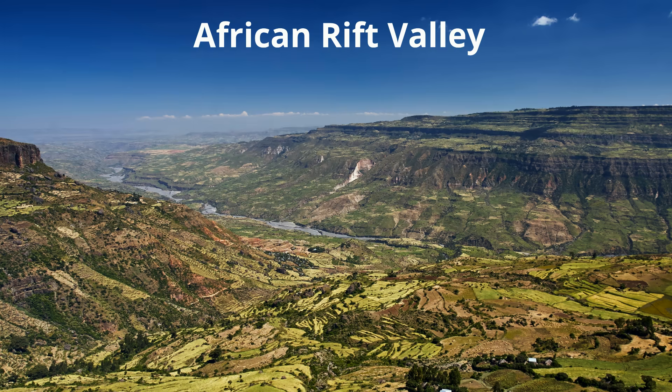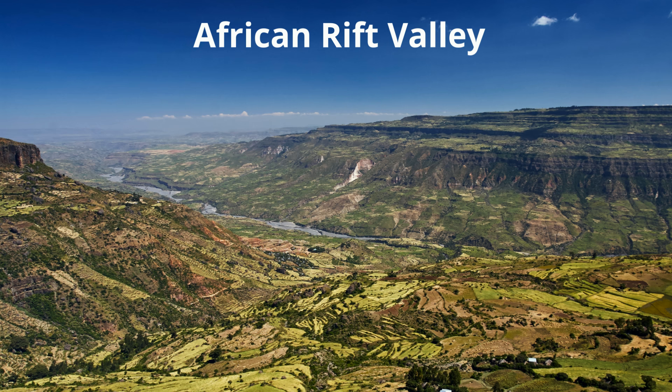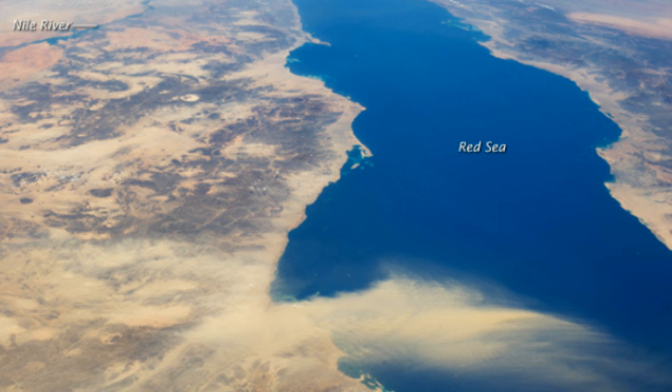The East African rift valley was created when continental and continental divergent boundaries moved away from each other. The Red Sea is another example.